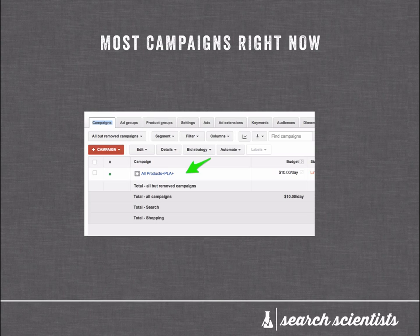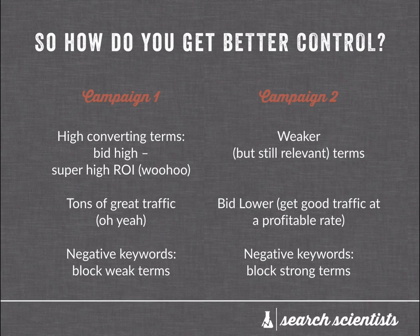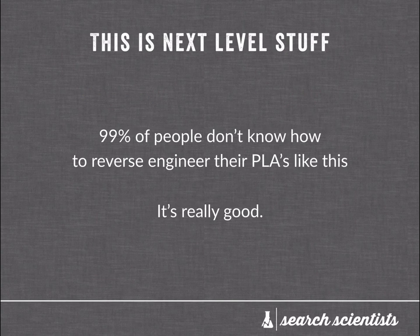Now, this is fine for getting started. When you're really busy and you have a million things to do with your e-commerce store, this will be okay. However, in order to get better control from your campaigns, we talked about this two-campaign model. In the first campaign on the left, that's where all of your high-converting terms roll in — it allows you to bid a little bit more aggressively so you get more traffic for these really high-ROI terms. We talked about using negative keywords to block the weak terms. In campaign two on the right side, we talked about funneling all of your weaker but still relevant terms where you bid a little bit lower — you still get that traffic but at a cheaper rate, and you block the strong terms. This is something that most people don't know how to engineer and it's a great way to get ahead of your competition.